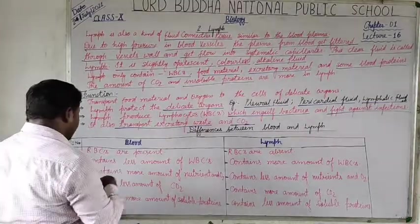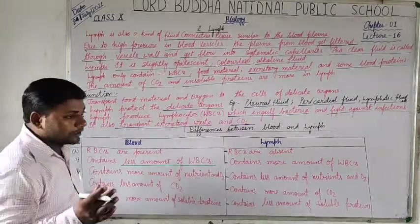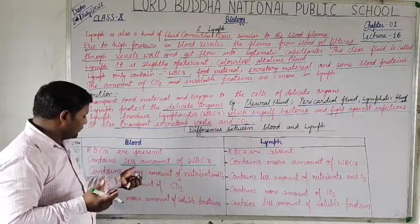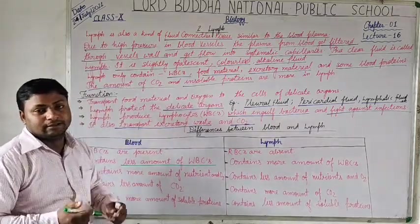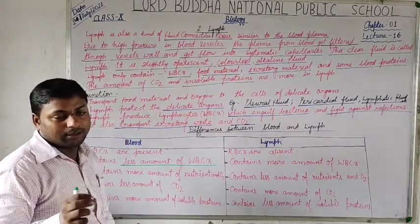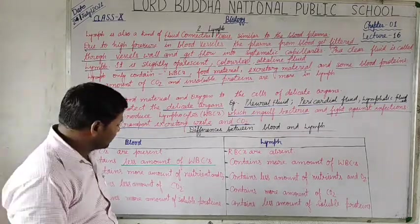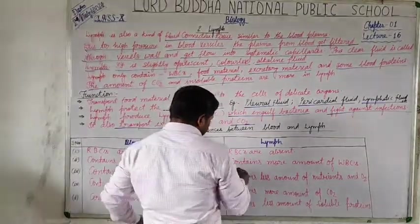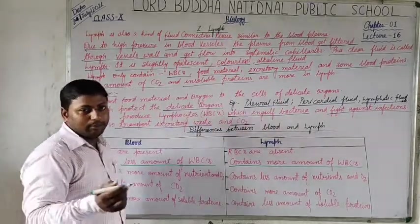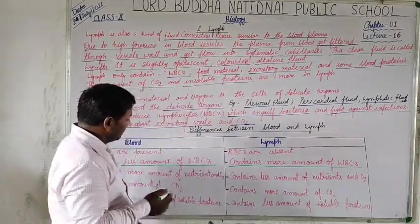Blood contains a relatively low amount of WBCs — about 6,000 to 10,000 WBCs per milliliter of blood sample. But in lymph, it contains a greater amount of WBCs — the number of WBCs is quite high in the lymph.